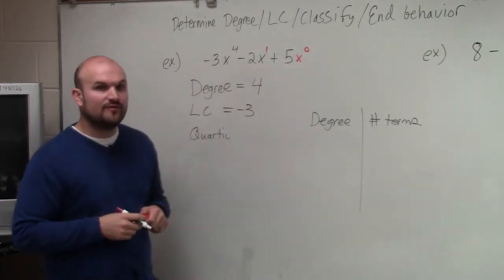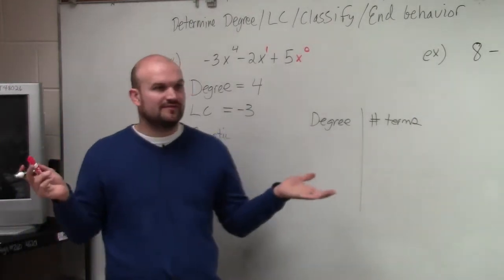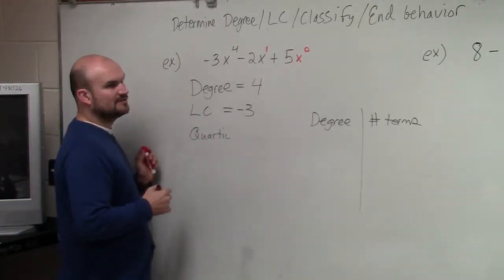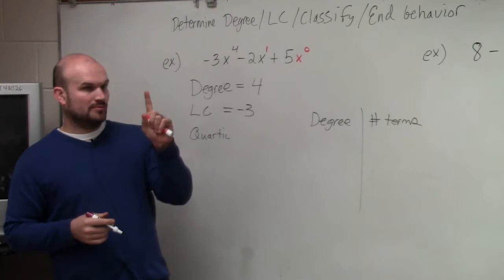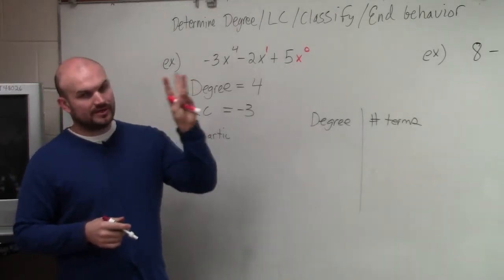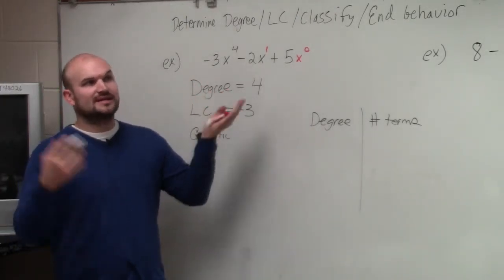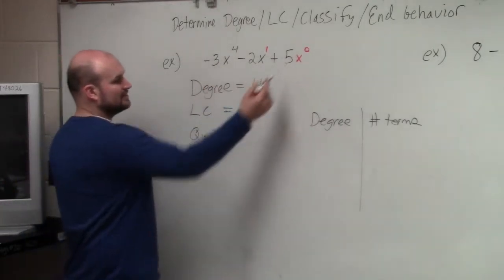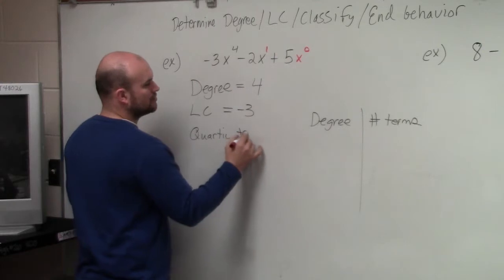If it has a degree of higher than 4, then we just leave it as a degree of 5. We just say degree of 5, degree of 6, whatever. Then we look at the number of terms. If it has one term, it's a monomial. 2 terms, binomial, 3 terms, trinomial. And if it has 4 or more terms, we just say a polynomial with 4 terms, polynomial 5 terms. Well, this one has 3 terms, so it's called a trinomial.